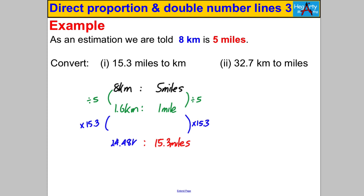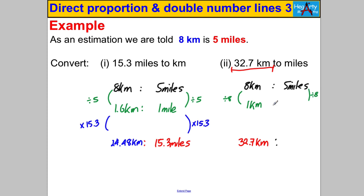1.6 × 15.3 = 24.48 kilometres. Next question: convert 32.7 kilometres to miles. Write 8 km to 5 miles, then work towards 32.7 km. Divide both sides by 8 to find the unit rate: 5 ÷ 8 = 0.625 miles per km. Then multiply both sides by 32.7 to get 20.4375 miles.